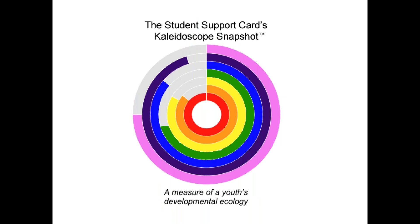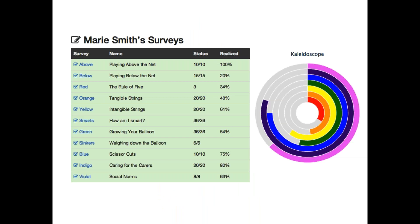Through Kaleidoscope snapshots, the Student Support Card illustrates what we call a youth's developmental ecology. The Student Support Card assessment measures the quantity and qualities of support that young people get from their school, family, youth programs, and faith communities. It measures the protective factors and learning supports that assure each student makes positive, healthy decisions.